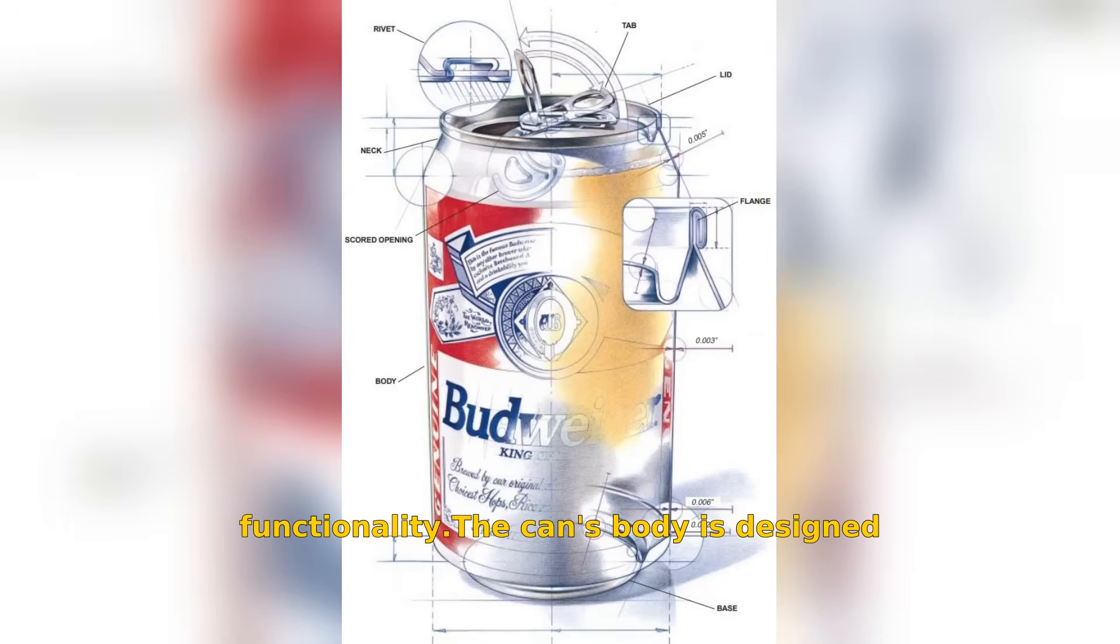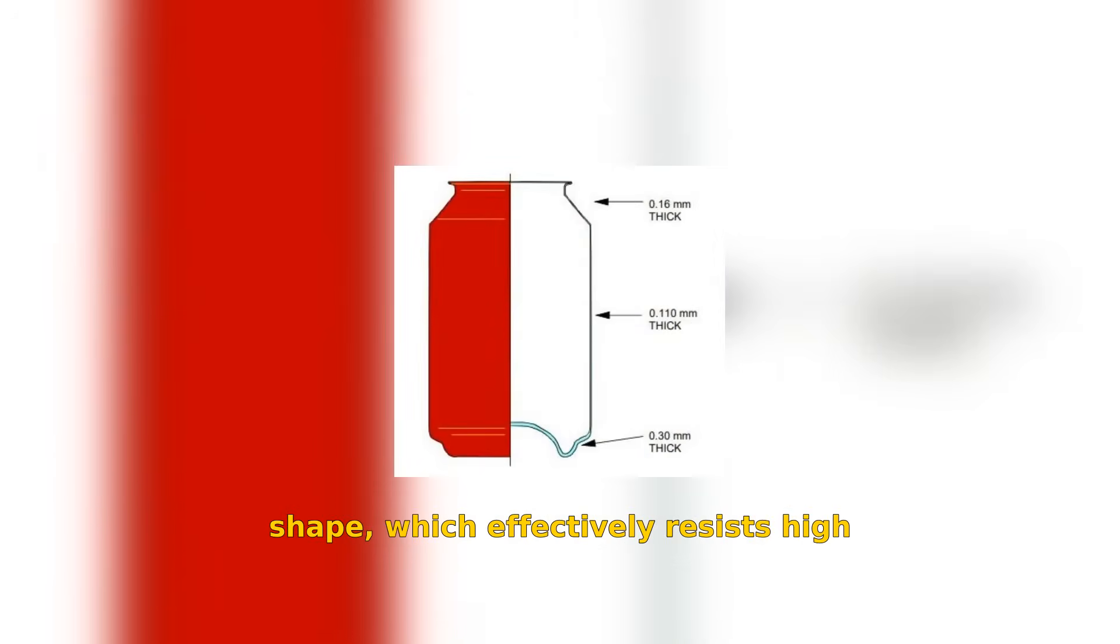The can's body is designed with a thicker base for strength, enabling it to withstand internal pressures of 6 atmospheres and supports weights of up to 100 kilograms. Notice how the bottom features a dome shape, which effectively resists high internal pressure, reinforcing the can's integrity.